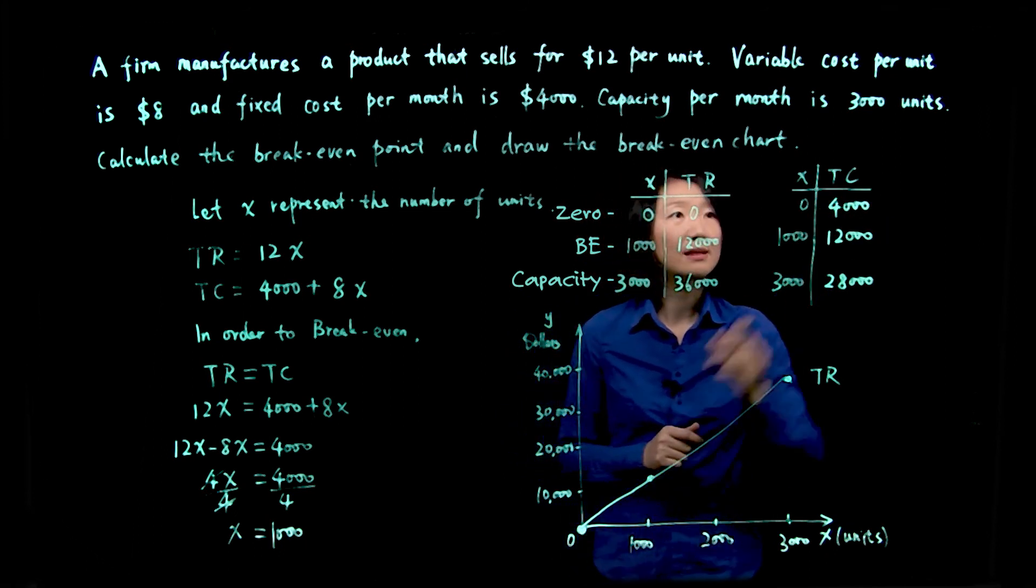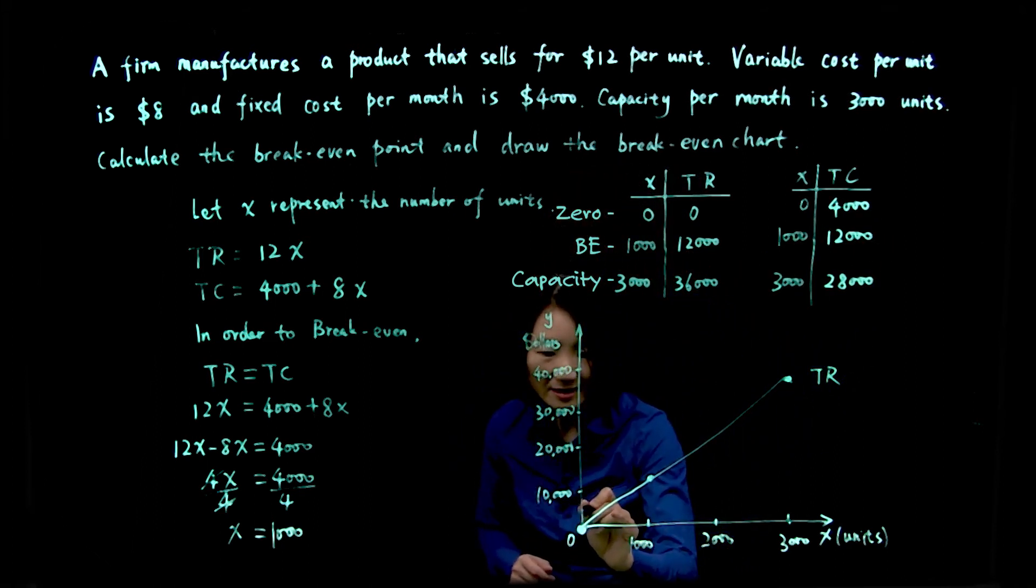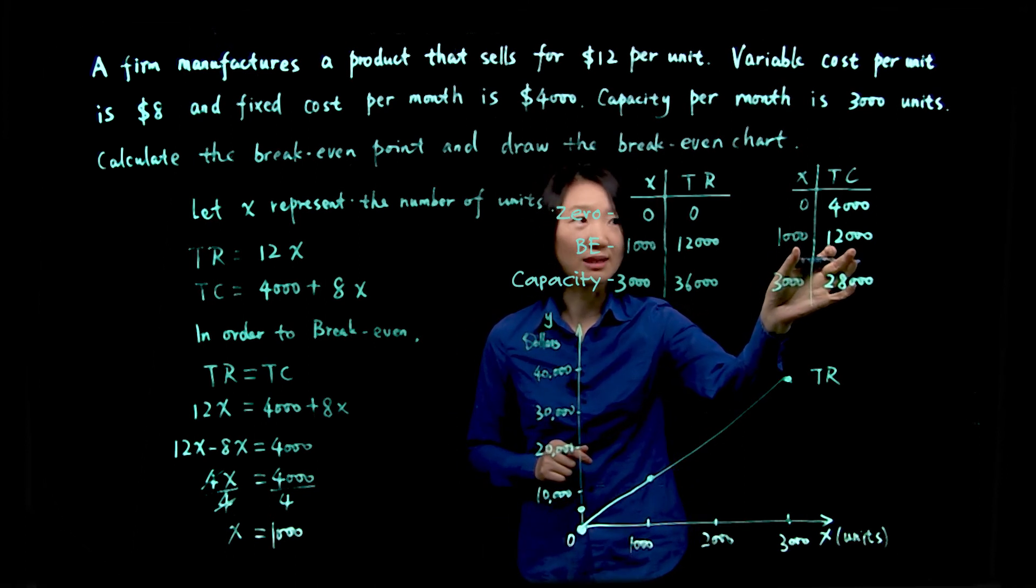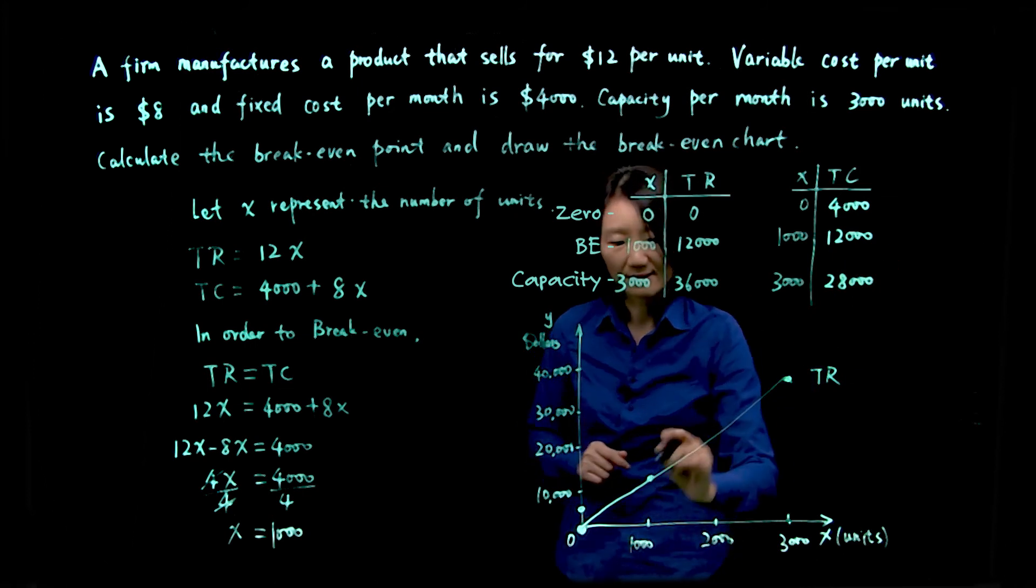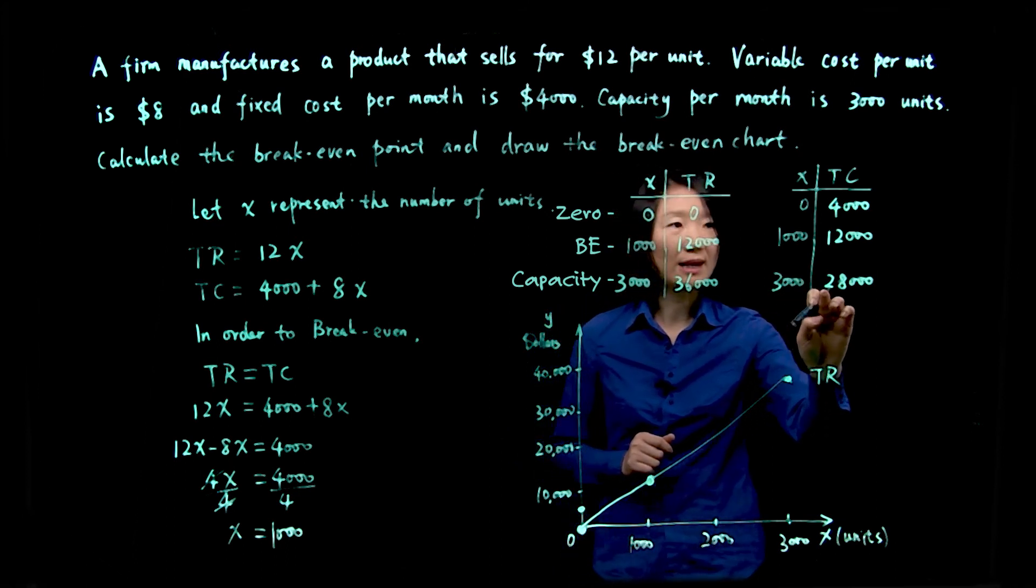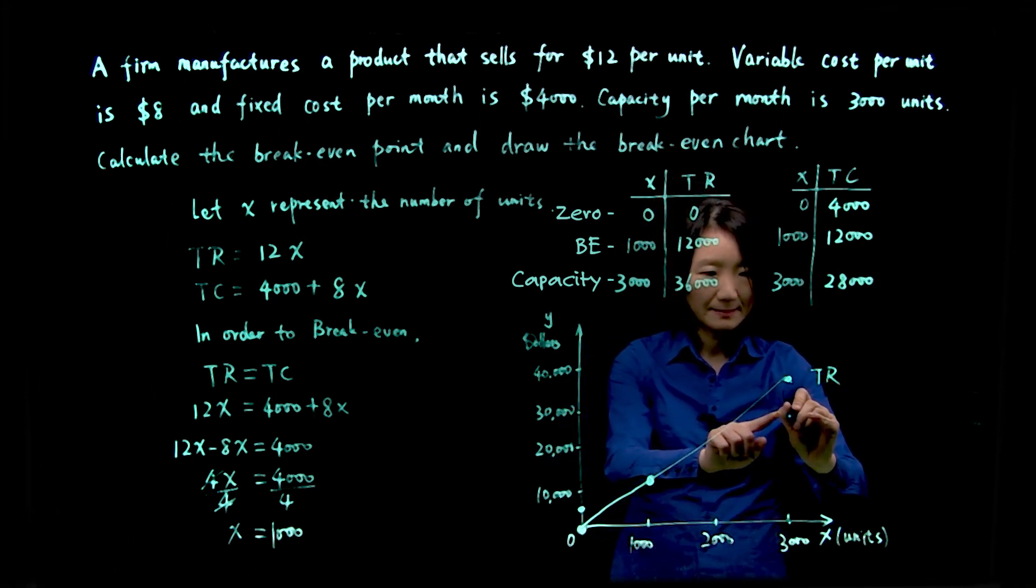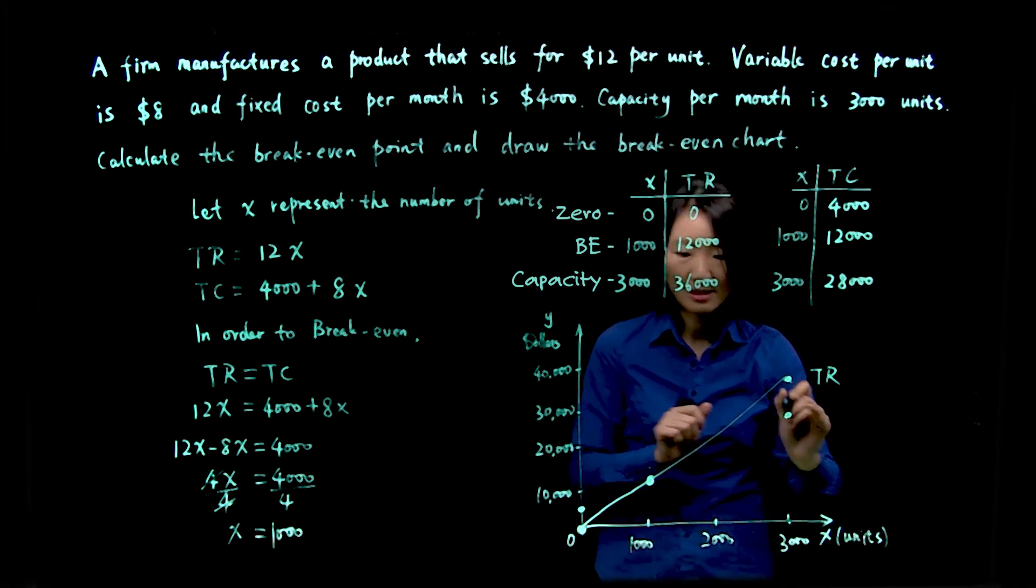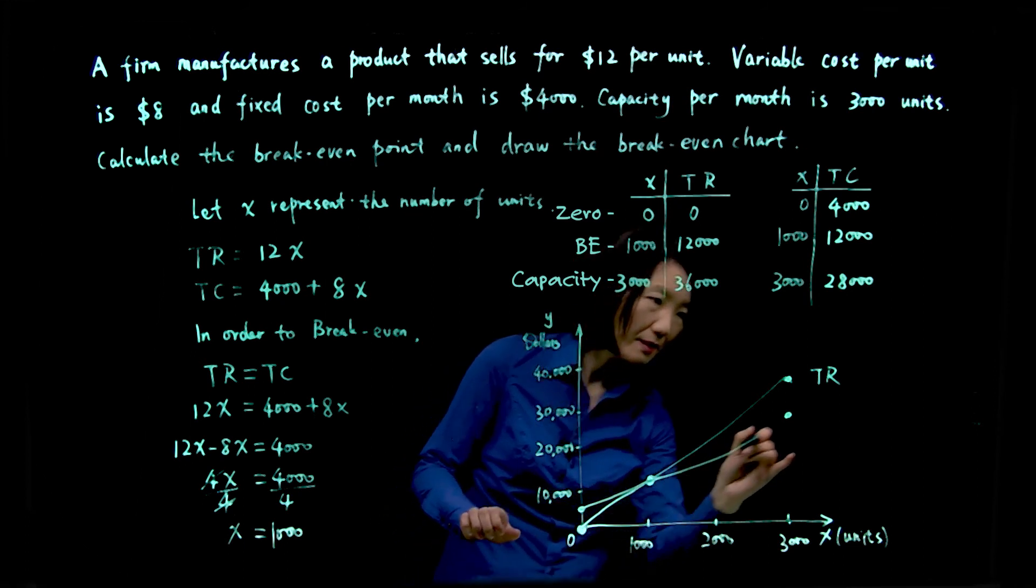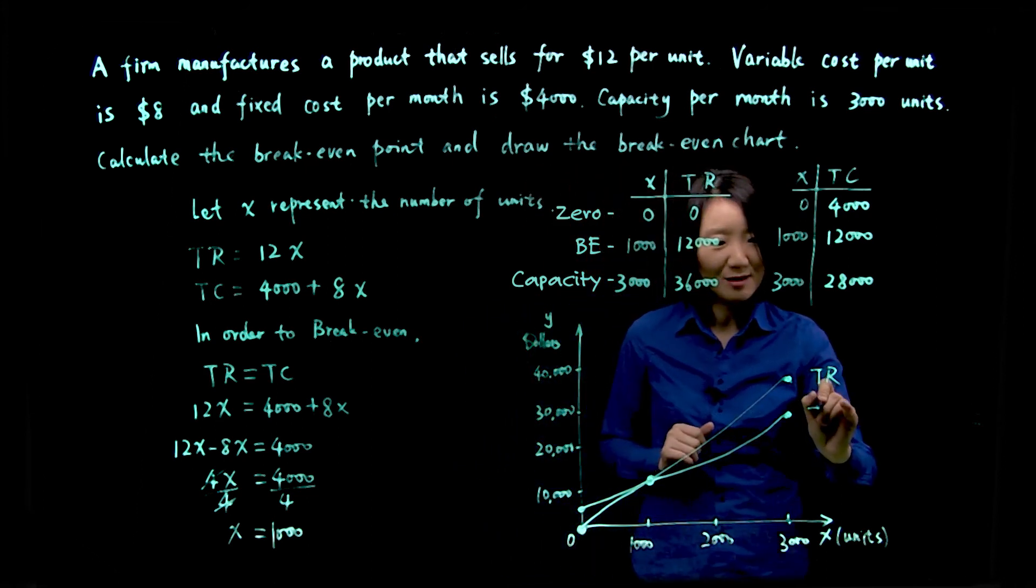Next, let's draw the total cost line. So first point, when x is zero, y is 4,000. So 4,000 somewhere here. And second point, break-even point, x is 1,000, y is 12,000, same point. Third point, when x is 3,000, y is 28,000. So 28 is below 30,000, somewhere here, and here is 3,000. So now we'll connect these three points. My line is not perfect, but you should be doing a better job with the ruler. So this is total cost.